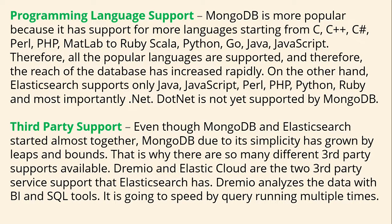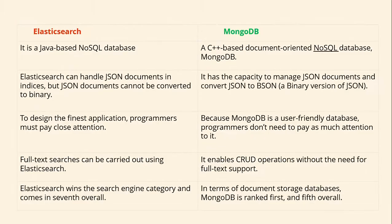In case of third-party support, even though MongoDB and Elasticsearch started at around the same time, MongoDB due to its simplicity has grown by leaps and bounds, so there are many third-party support options available. DreamU and Elastic Cloud are the two third-party service supports that Elasticsearch has. Elasticsearch is a Java-based NoSQL database, while MongoDB is a C++ document-oriented NoSQL database.